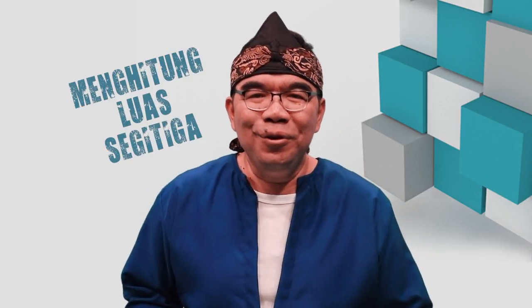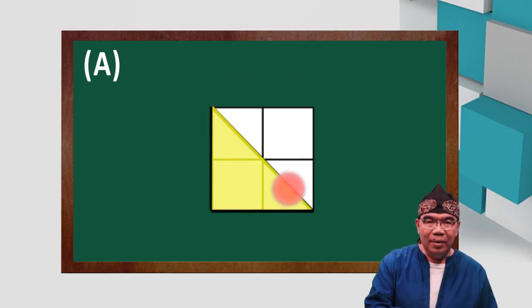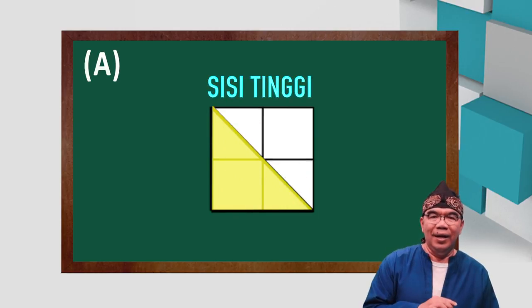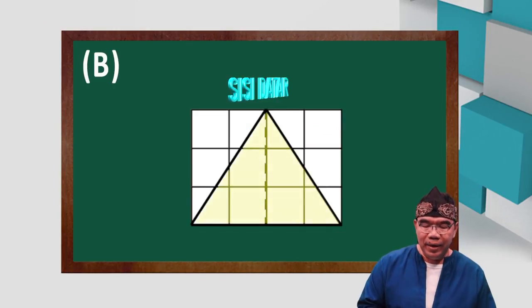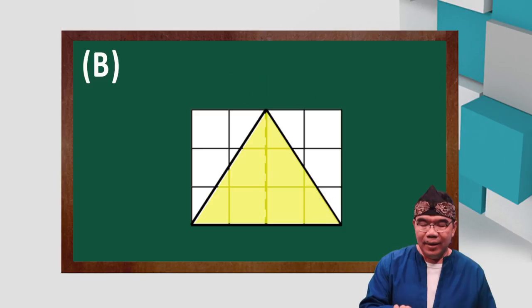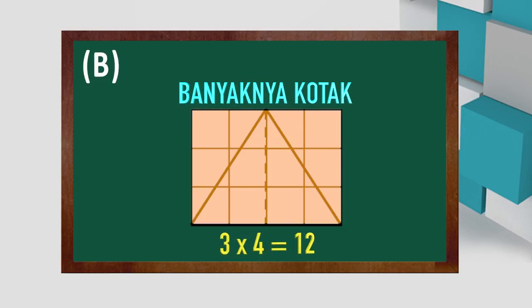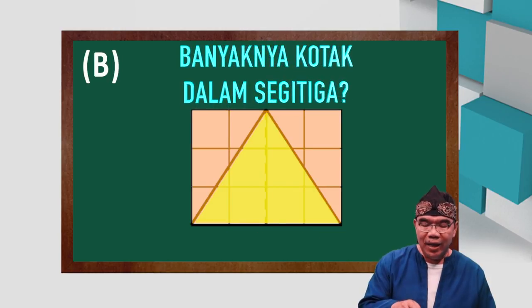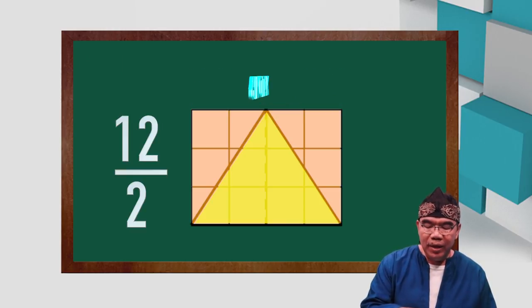Anak-anak, Bapak akan terangkan bagaimana menghitung luas segitiga. Perhatikan gambar berikut. Sisi datarnya 2, tingginya 2. Banyaknya persegi atau kotak di sini adalah 2 buah. Perhatikan gambar B: sisi datarnya 4, tingginya 3. Banyaknya kotak yang ada dalam segitiga ini adalah 12 dibagi 2, berarti jumlahnya 6.